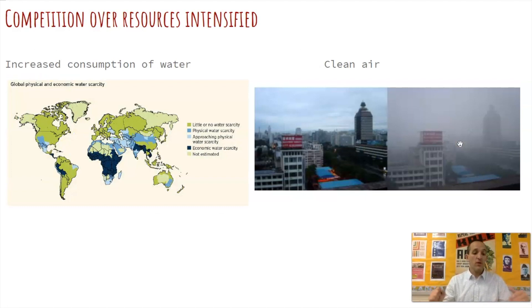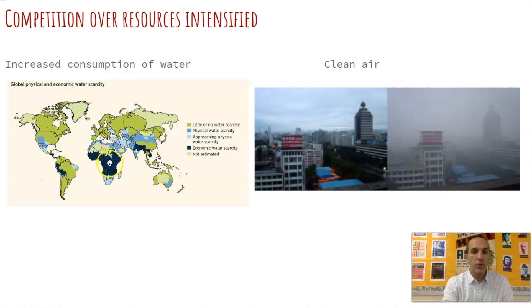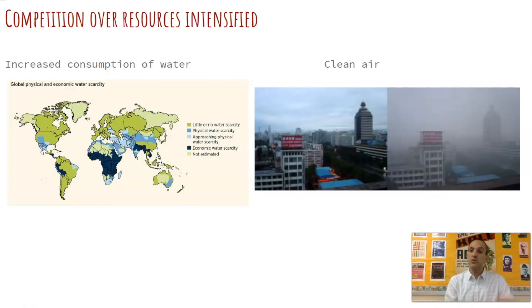We also have competition over resources. Because of population growth, there is increased consumption of water, and in some areas around the world we have water scarcity, which leads to wars and fighting between different peoples. On this map, very light blue indicates areas approaching water scarcity, darker blue indicates physical water scarcity, and the darkest blue is economic water scarcity. We can see this in Sub-Saharan Africa, Ecuador, Peru, and even the southwest United States, where people may have restrictions on sprinkler use or limited water consumption in summer.